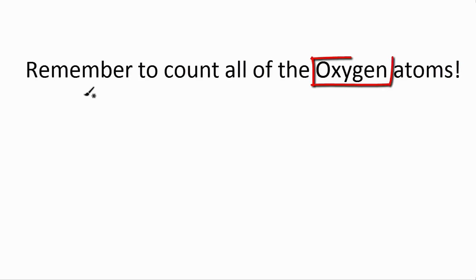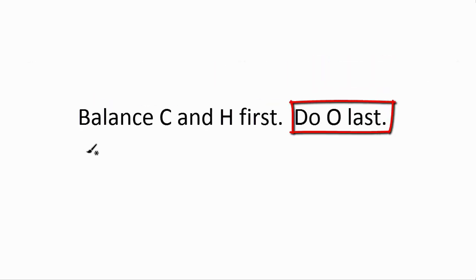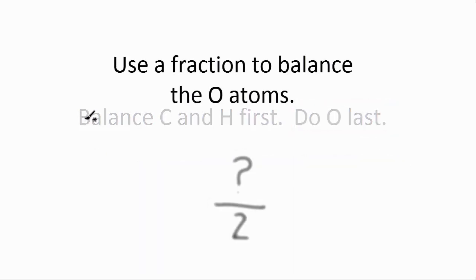Again, the key to balancing combustion reactions: make sure you count the oxygens on both sides of the equations. Don't forget about the water. You then need to make sure that you do the carbons and hydrogens first, leaving the oxygens to last. Use the fraction we discussed. And then finally, if you want whole numbers, multiply the whole equation by 2.